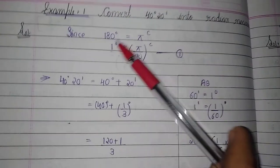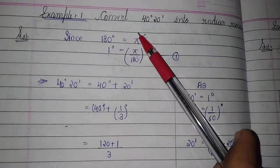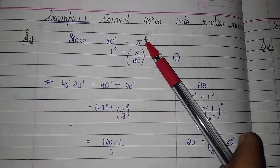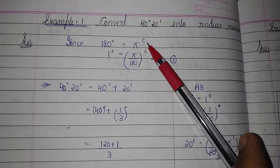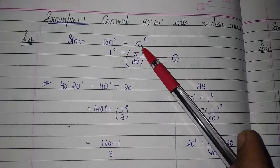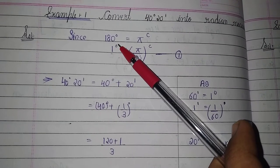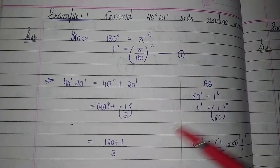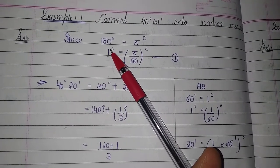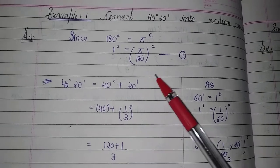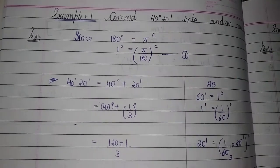We have to convert to radian, so we write the formula: 180 degrees is equal to π radian. From this, 1 degree is equal to π upon 180 radian.